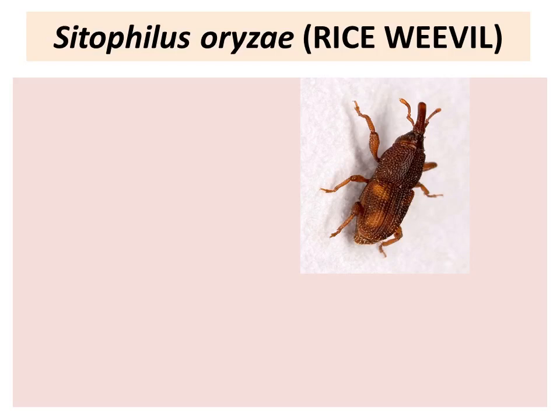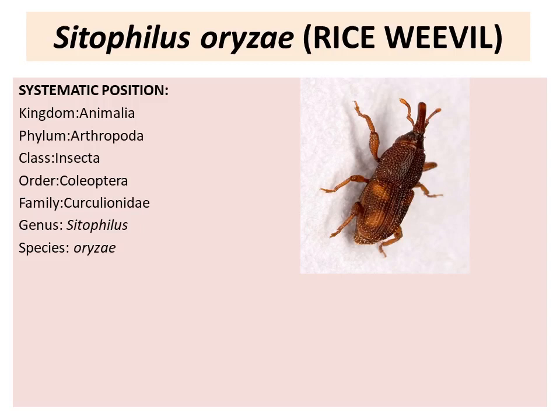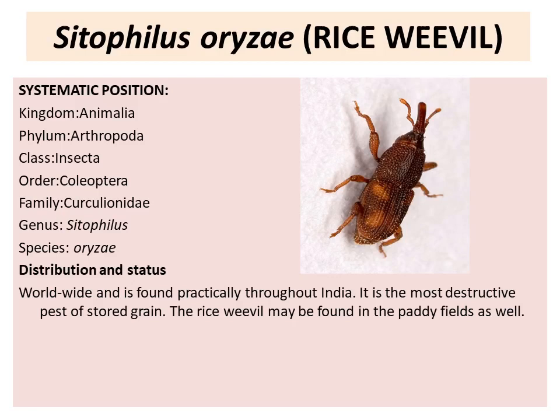Now coming to the second pest, Sitophilus oryzae, that is the rice weevil. Its systematic position: kingdom Animalia, phylum Arthropoda, class Insecta, order Coleoptera, family Curculionidae, genus Sitophilus, species oryzae. Distribution and status: it is worldwide and found particularly throughout India.